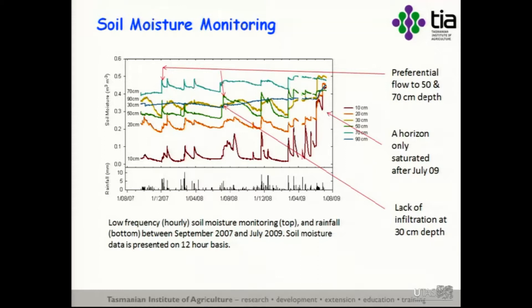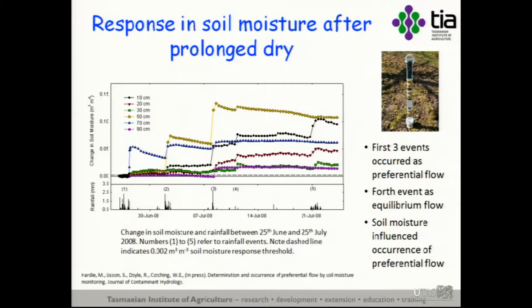We end up filling the soil from the bottom up. This is a sequence of rainfall events after a prolonged dry period. With the first rainfall event, the only sensor to respond was at 70 centimetres depth — the rainfall literally bypassed the whole soil profile. The next rainfall event, 50 and 70 centimetres responded: 70 is full, now starting to fill 50, working up the profile. 10 centimetres started to respond, with the soil wetting further down.